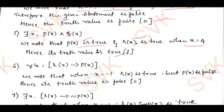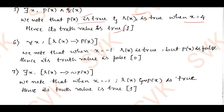Moving on to the sixth: for all x, r(x) implies p(x). r(x) is true for x = 4 and x = −1. Considering x = −1, r(x) is true but p(x) is not satisfied since x must be positive. Therefore p(x) is false. True implies false is always false. So this truth value is false.